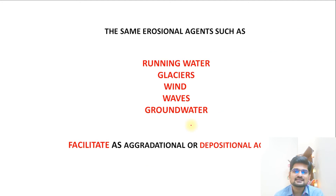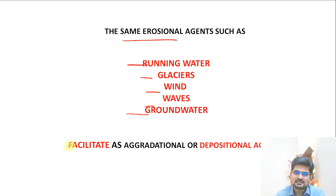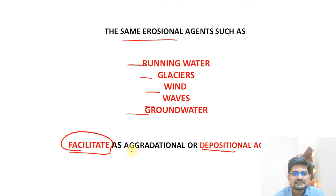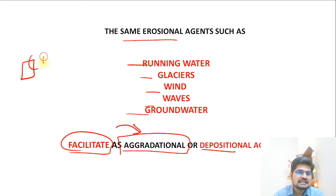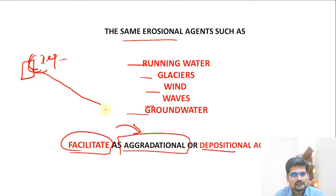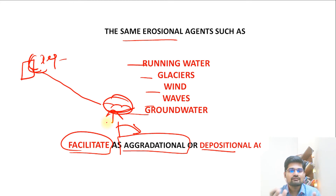The agents of erosion — running water, glaciers, wind, waves, and groundwater — are also the agents of deposition. This facilitation is what we call aggradation. Material is weathered and moved from higher areas, then fills depressions elsewhere, building up the surface. The same agents — running water, glacier, wind, wave, and groundwater — are the key factors here.